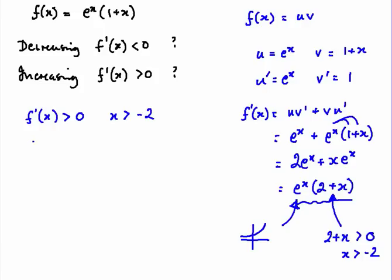Consequently, f'(x) is decreasing when x is less than minus 2. Those are our two areas, separated at minus 2 where there's a stationary point, and increasing and decreasing on either side. Our job is done.